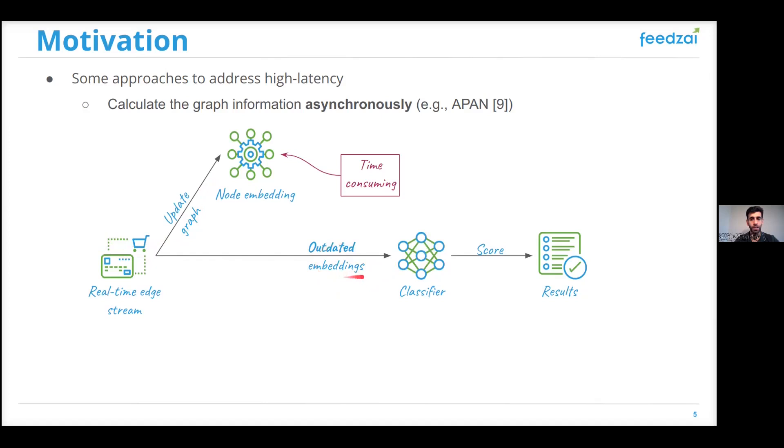And because of this, they achieve low latency, of course, because we don't need to perform the node embeddings anymore in the critical path. However, the classifier is not using the most up-to-date information, and this could cause less accurate decisions.